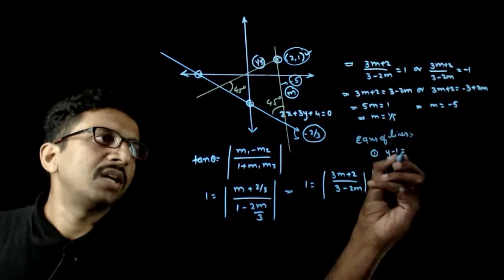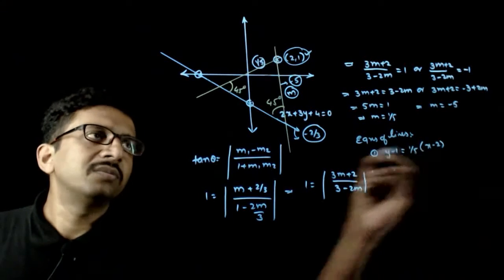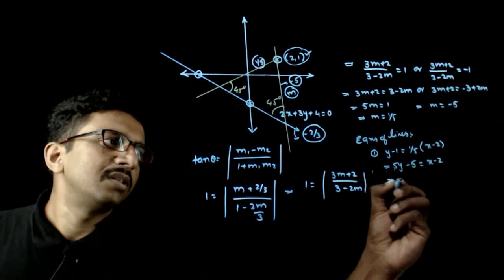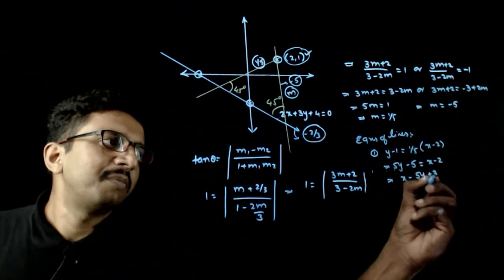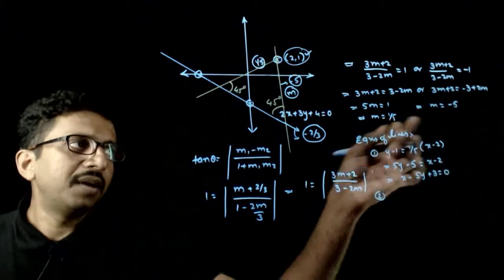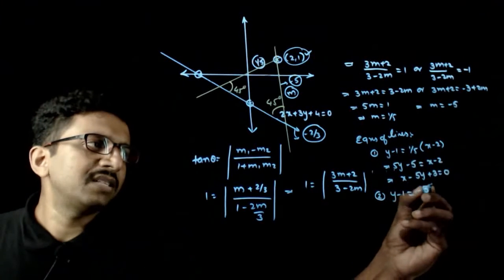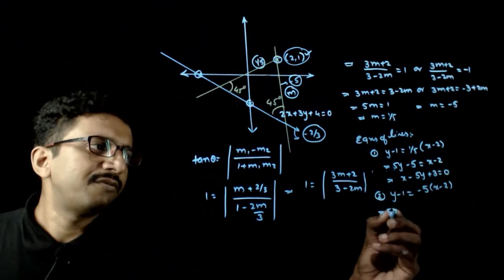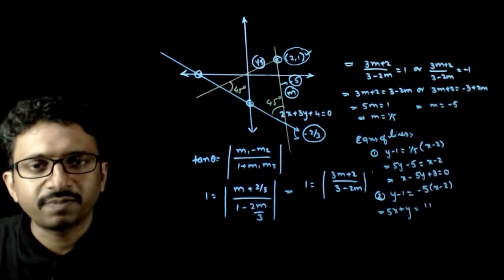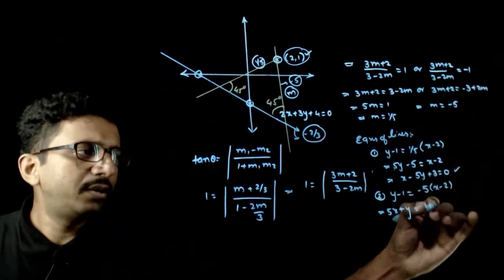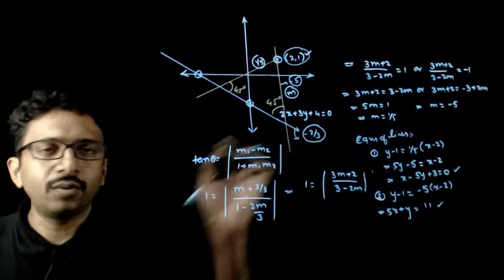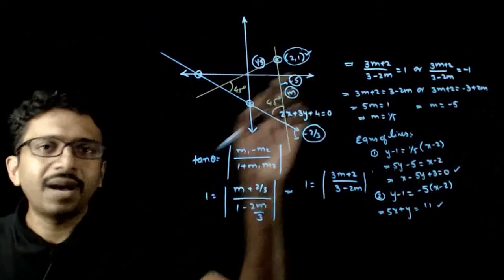For the first line with slope 1 by 5: y minus 1 equals 1 by 5 times (x minus 2), which gives 5y minus 5 equals x minus 2, so x minus 5y plus 3 equals 0. For the second line with slope minus 5: y minus 1 equals minus 5 times (x minus 2), which gives 5x plus y equals 11. These are the two lines making an angle of 45 degrees with 2x plus 3y plus 4 equals 0 and passing through the point (2,1).